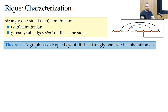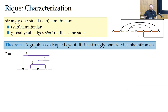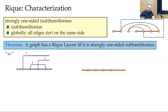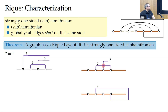This is not hard to prove. For the first direction: if there is no requeue layout, the forbidden configuration appears somewhere. Trying to place it in a strongly one-sided sub-Hamiltonian layout — if edge two starts at the top, the edge starting at three cannot leave the space without a crossing. If it enters from the bottom, the edge starting at one must end somewhere on the spine, and no matter how we route it, we always get a crossing.